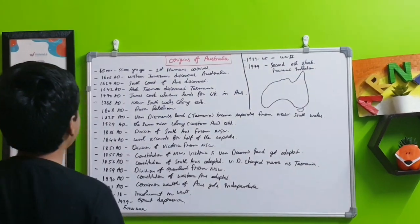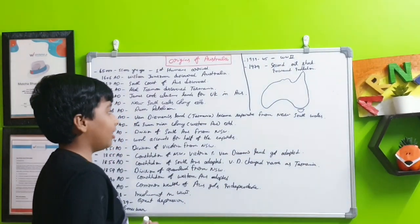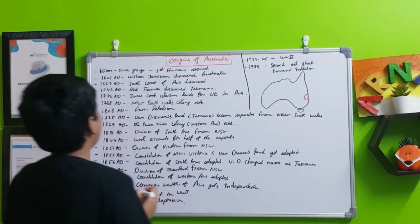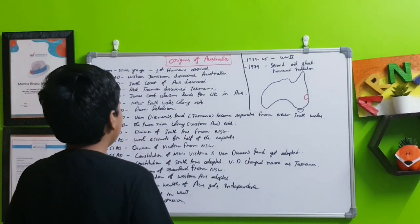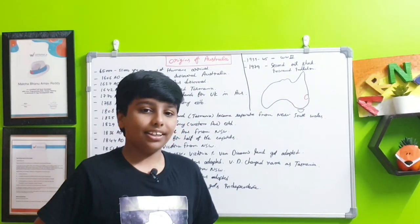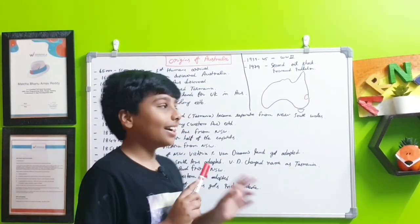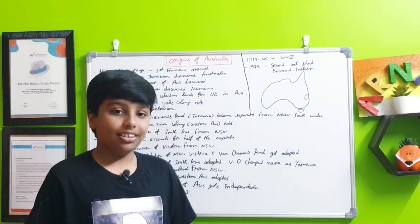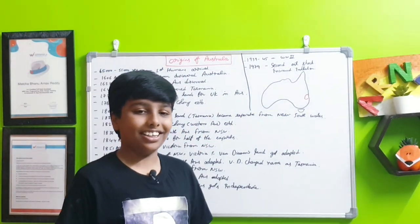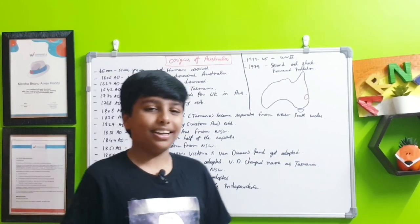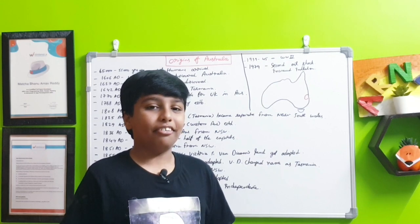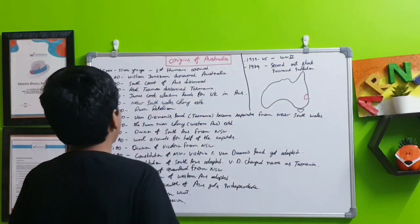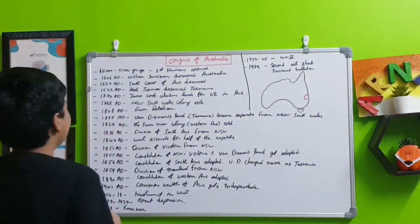In 1788 AD, the New South Wales colony was established. At that time it was just like the Sydney region. In 1808 AD there was the rum rebellion. At that time one of the governors of this New South Wales colony who ruled from 1806 to 1808 made the rum illegal, outlawed. Because of this they did a rebellion and the governor was deposed.